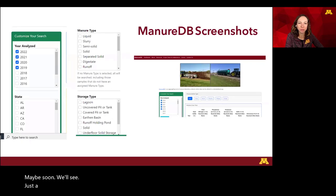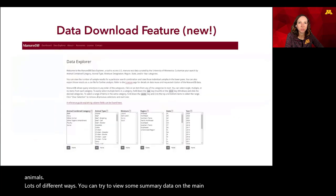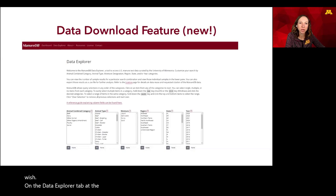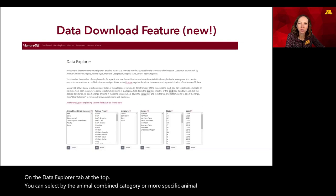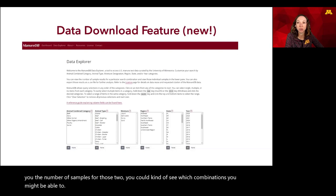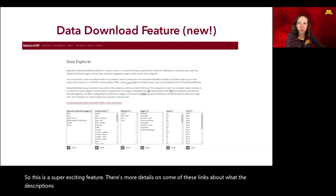Here are just a few screenshots of the website. You can sort by different years, states, types, and animals — lots of different ways to view summary data on the main page. A recent feature added in January is the option to download data. On the data explorer tab at the top, you can select by animal combined category or a more specific animal type, moisture designation, region, state, or year. It also shows you the number of samples for those selections, so you can see how many samples there are for any particular combinations you're interested in.